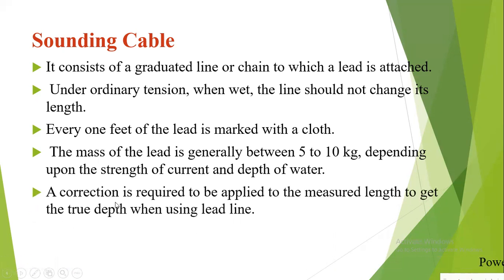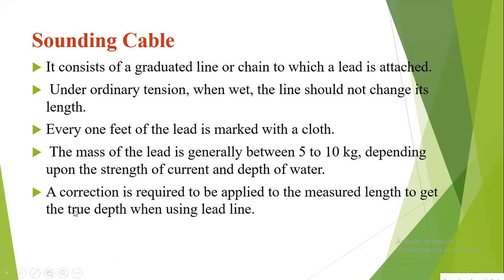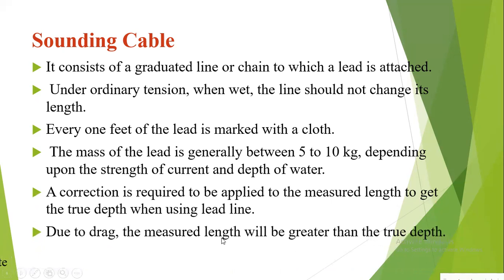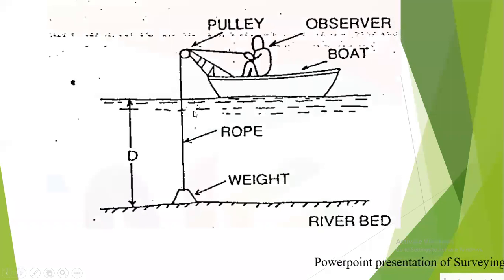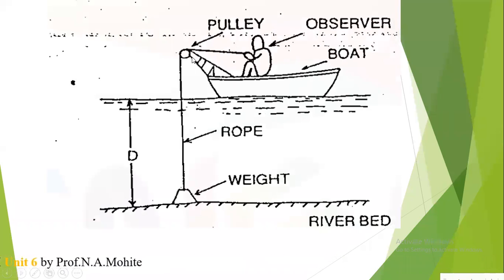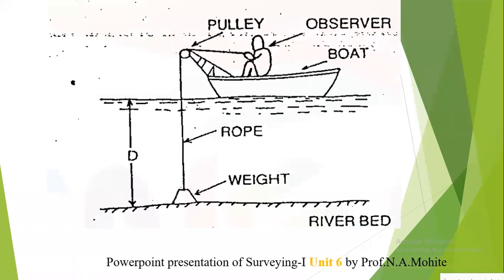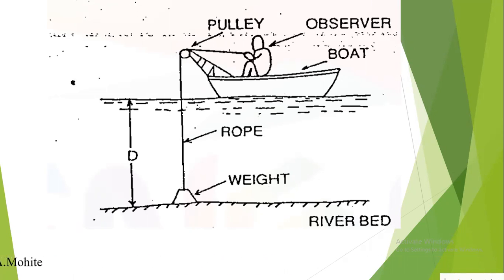When the weight just touches the bottom of the river, a mark is made on the cable exactly at the water level, and then the depth is measured by tape. A correction is required to be applied to the measured length to get the true depth when using the lead line, because due to drag, the measured length will be greater than the true depth. You can see here a person sitting in the boat — the observer — with a pulley, releasing the cable with a counterweight until it touches the bottom.